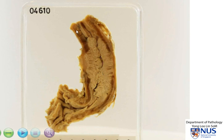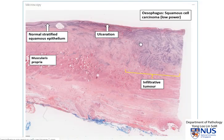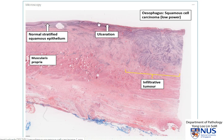Let's have a brief look at the microscopy of an example of squamous cell carcinoma of the esophagus. Here is a full thickness section through the esophageal wall. This is the stratified squamous mucosa, as you can see here. And in this area, there is loss of the mucosal layer.